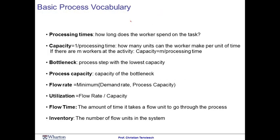Now we're ready for some definitions. The processing time captures how long a resource takes to serve a flow unit — for example, station two had a processing time of 46 seconds per customer. We define the capacity of the resource as one over the processing time, which in our case is 1/46 customers per second. To make this easier to imagine, multiplying by 3,600 seconds per hour shows that the worker at station two is able to serve roughly 78 customers per hour.